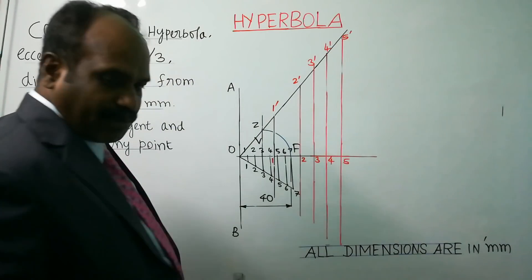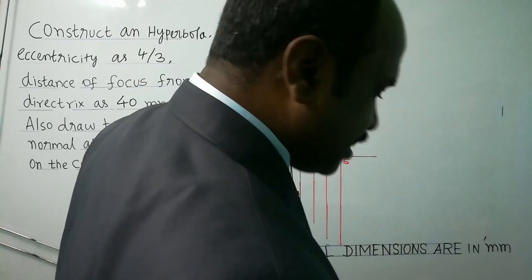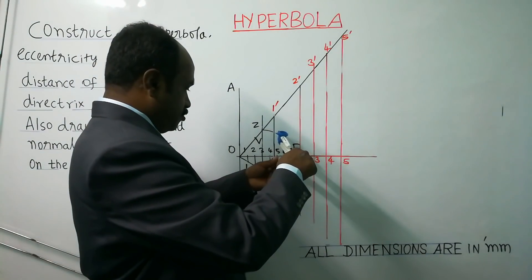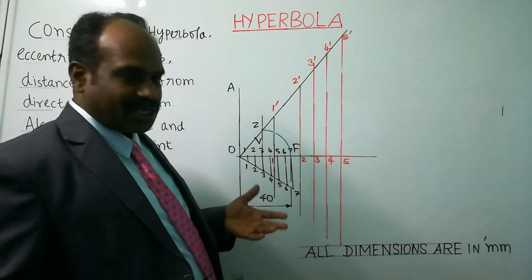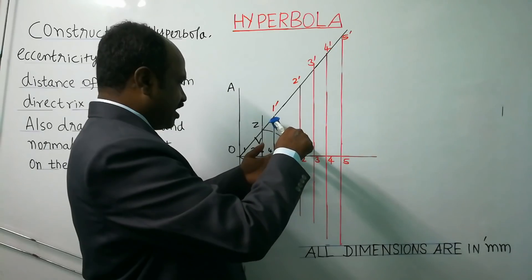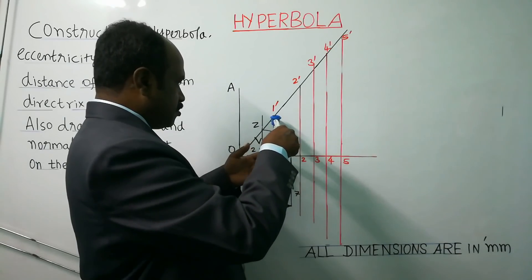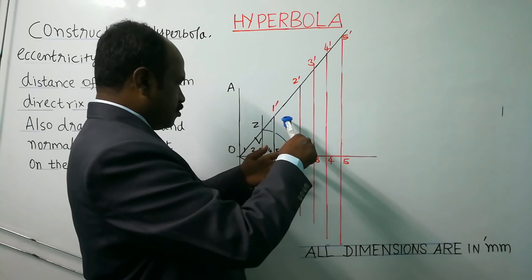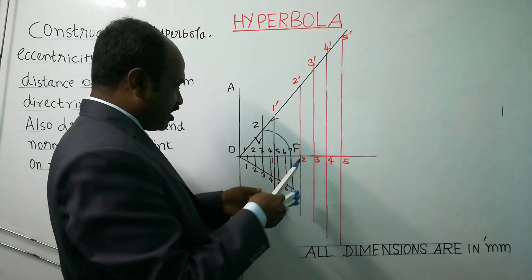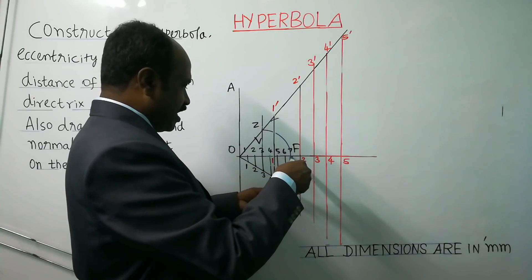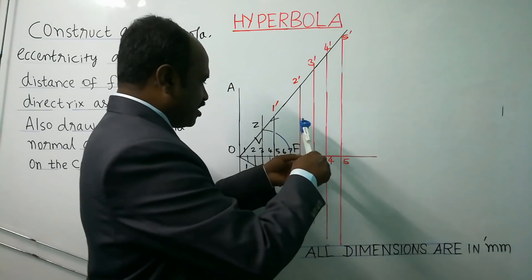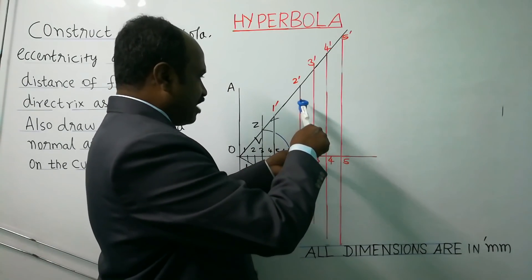Now take your compass. Take the distance 1 to 1 dash and set that as radius with F (focus) as the center — F is the fixed point called focus. Draw an arc cutting the first vertical line. Similarly, take distance 2 to 2 dash and with F as center cut an arc on the second vertical line. Repeat for 3 to 3 dash, 4 to 4 dash, and up to any number of vertical lines drawn.